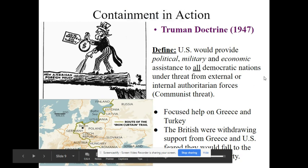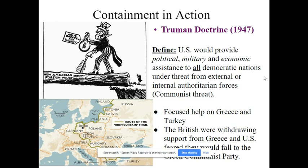The first of the two containment plans is the Truman Doctrine. These containment plans are very important — you need to know what the Truman Doctrine and the Marshall Plan were. These are the two main containment actions taken by the United States. The Truman Doctrine, based on President Truman, means the U.S. would provide political, military, and economic assistance to all democratic nations under threat from external or internal forces.